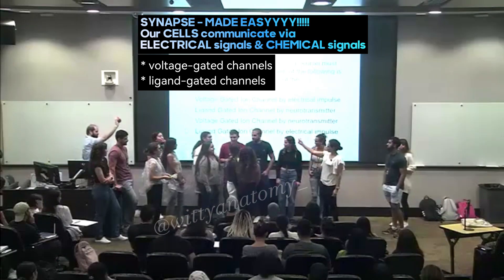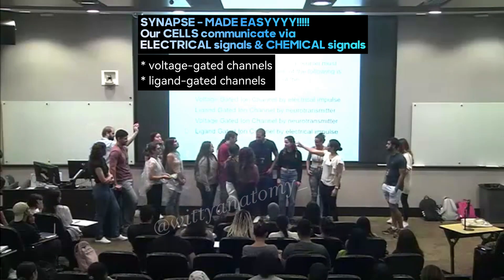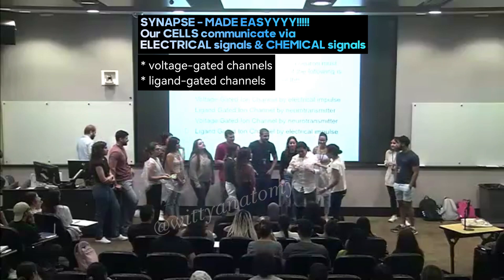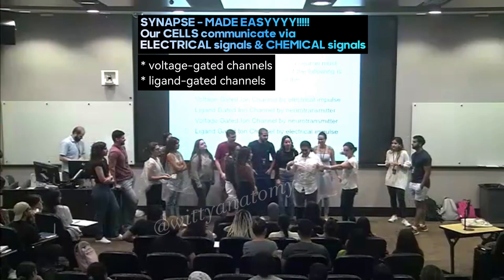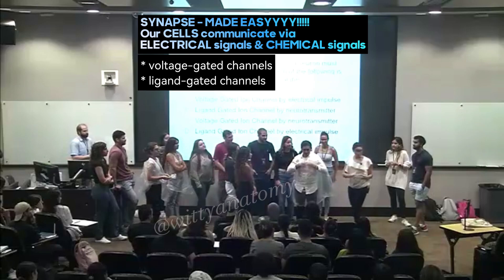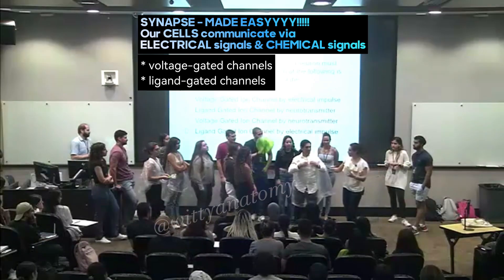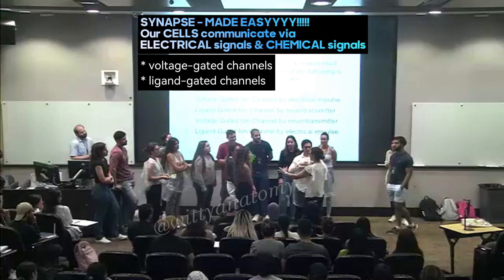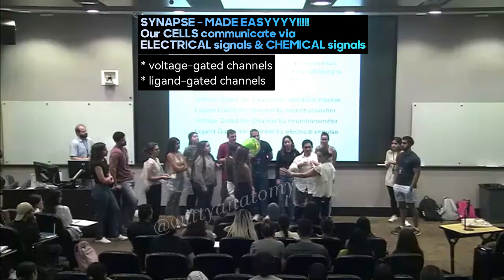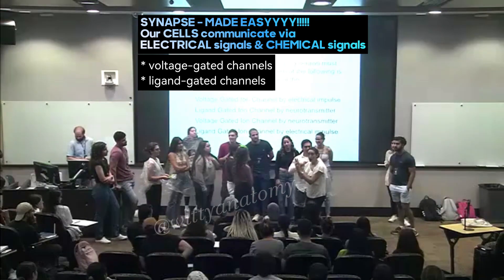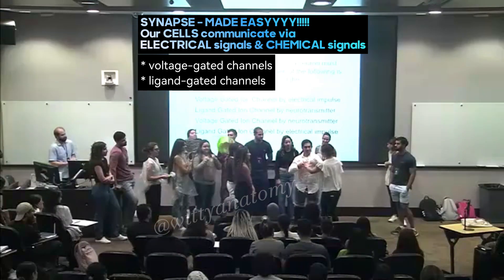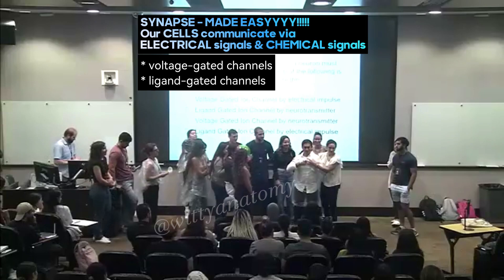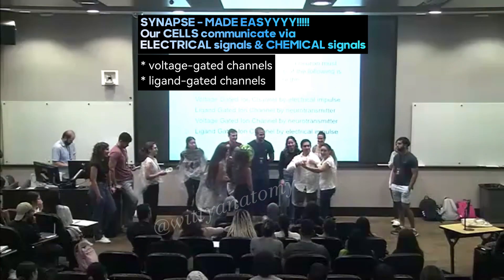Here is the nerve and the terminal button. The electrical signal flows through the nerve fiber and reaches the terminal button. This will cause the neurotransmitter, held within a vesicle, to be released into the gap between the two cells.